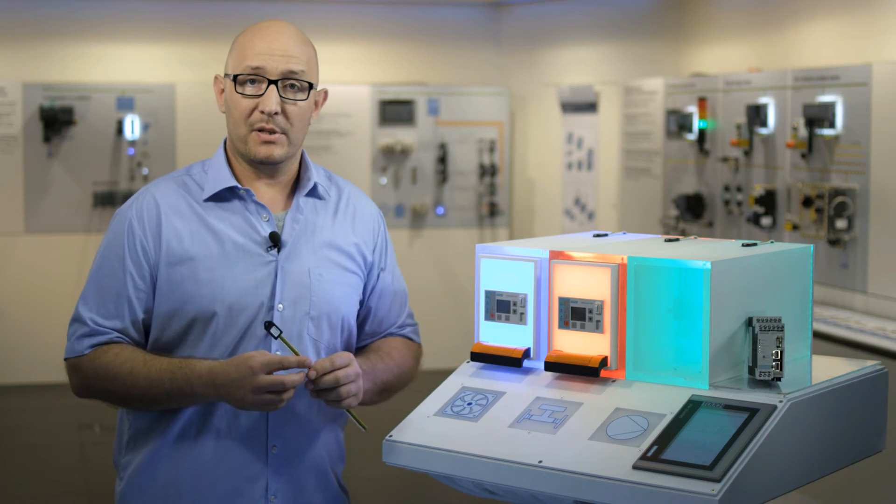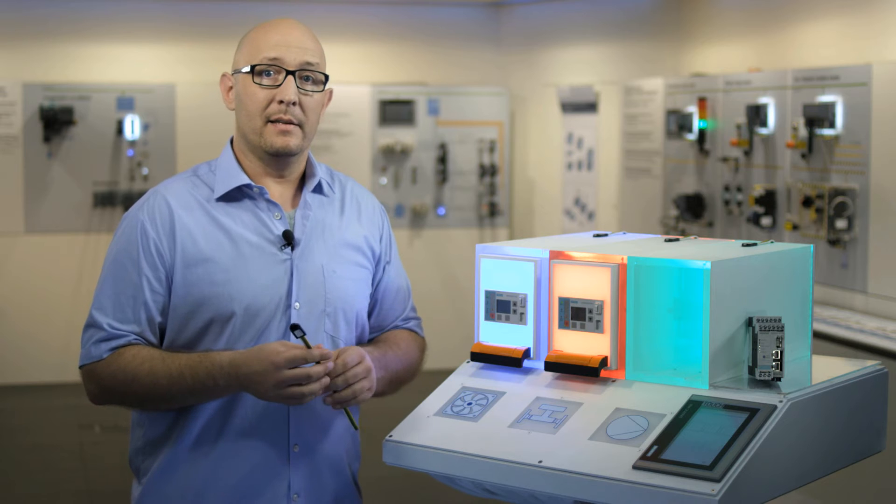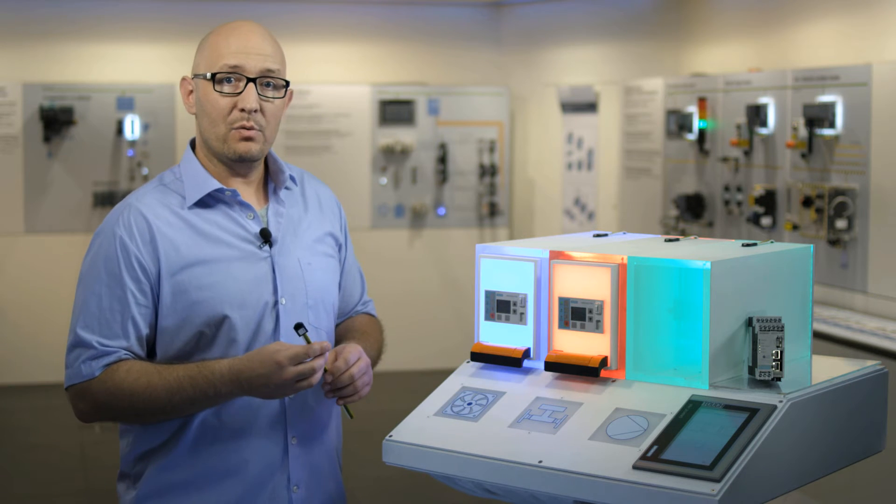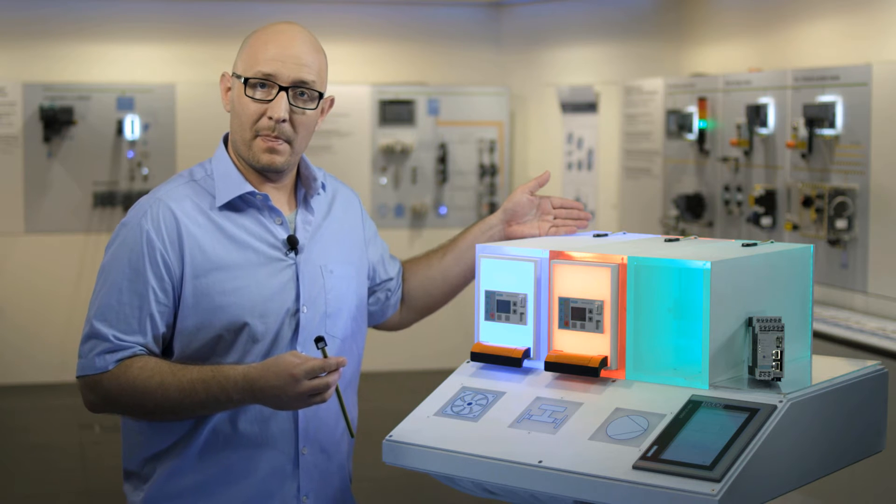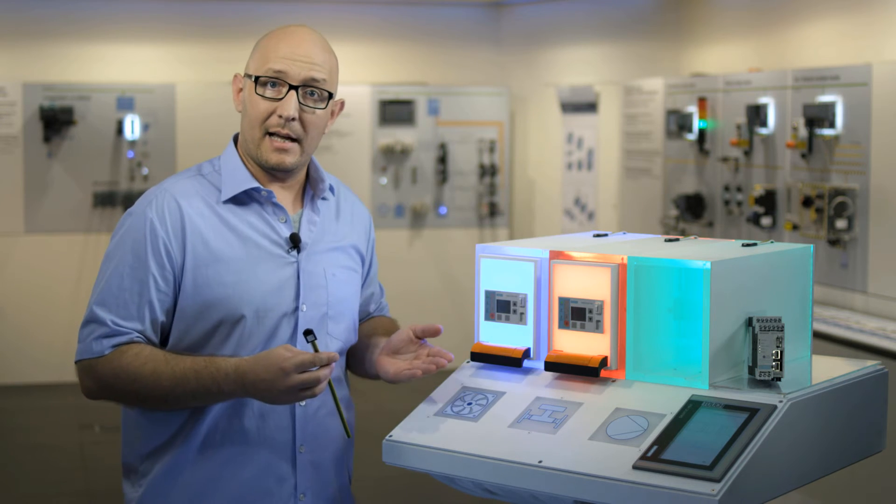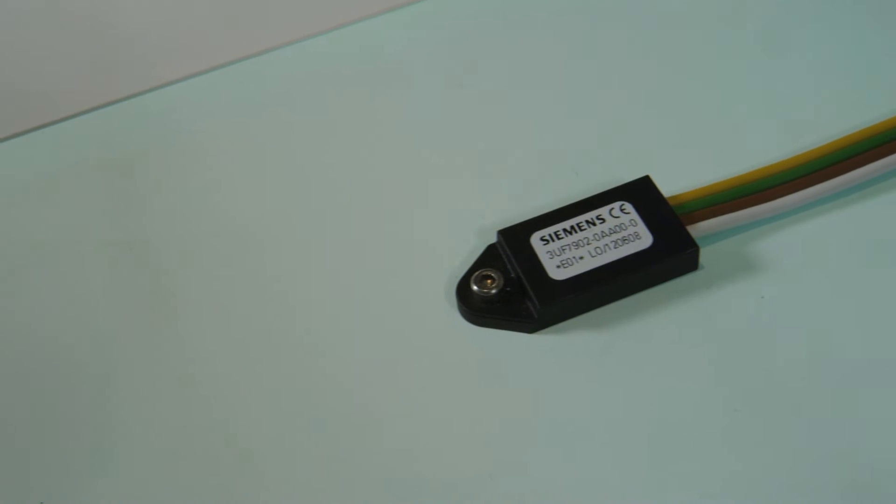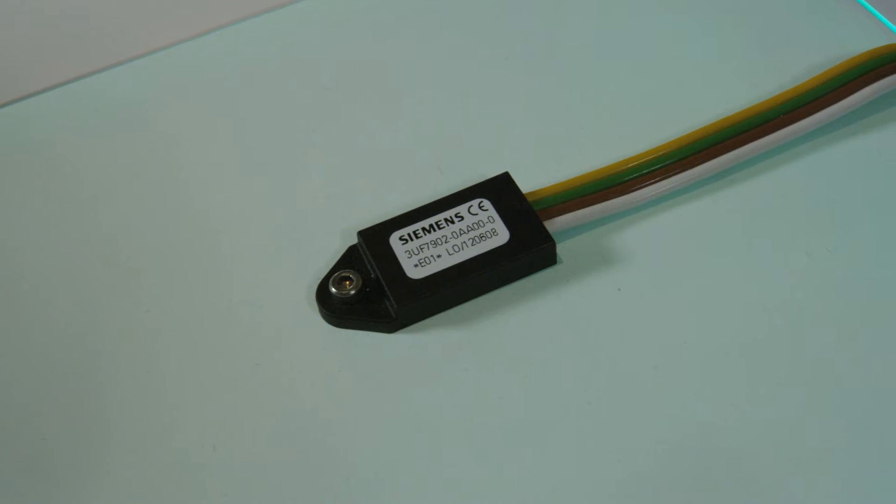All parameters and address data of the motor feeder are not only saved in the device, but in this Initialization Module as well. Because the Initialization Module is permanently installed in the switchgear, it is not replaced when withdrawable units are replaced and therefore cannot be confused.